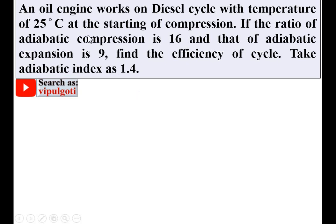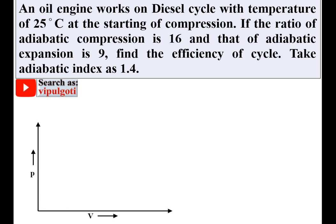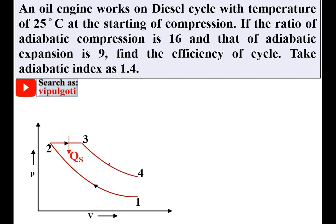Before starting the solution, we have to draw the diesel cycle on the PV diagram. This is the pressure versus volume diagram. The cycle starts from state 1. Process 1-2 is adiabatic compression, then process 2-3 is the constant pressure heat addition process — heat supplied QS. Process 3-4 is adiabatic expansion, and process 4-1 is constant volume heat rejection. For detail on diesel cycle efficiency using this PV diagram, refer to my earlier video on diesel cycle.